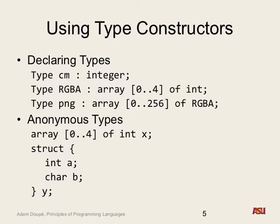So we've seen that a type system has specific types. A type system defines basic types, and then also allows the programmer to create and construct new types using these basic types. So here we have some types declared — we're defining type centimeter as an integer, defining an RGBA as an array of 0 to 4 of ints, and defining a PNG as an array of RGBAs.